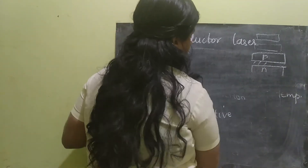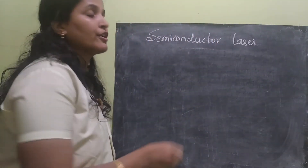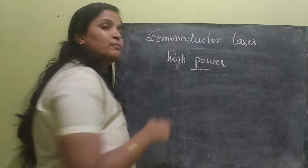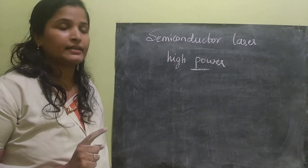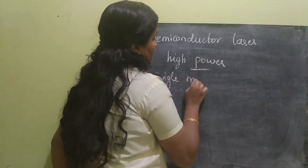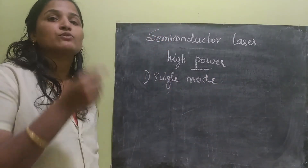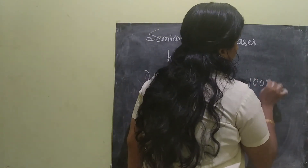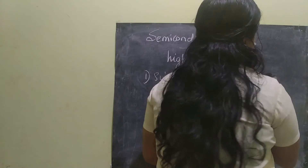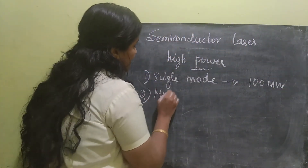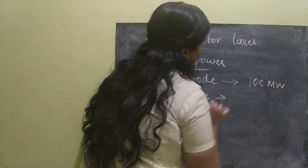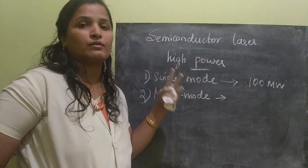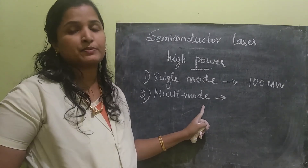We have another classification — in order to achieve high power, two modes of operation are possible in semiconductor laser. The first mode is single mode. In single mode, only one semiconductor substrate is used, and the output power we achieve is greater than hundreds of megawatts. And the second mode is multi-mode. Here, arrays of semiconductors are used. That's the only difference — in single mode, only one substrate is used, but here, arrays of semiconductor substrates are used. Thank you, students.